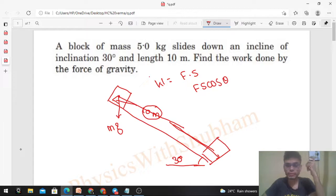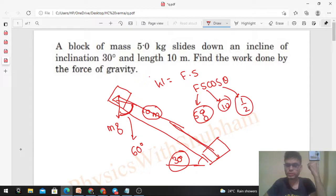What is the angle between mg and the displacement? See, this angle is 30 degrees, so this angle becomes 90 minus 30, which is 60 degrees. So F S cos theta - F is mg. m is given as 5, and g value you can take as 9.81. S is 10 meters, and cos theta is cos 60, which is 1 by 2. So this will be the value.